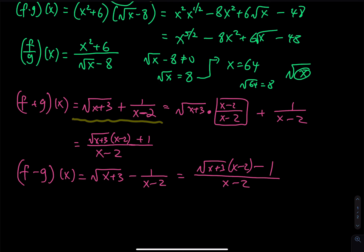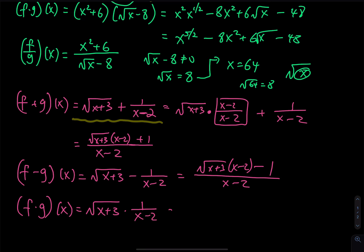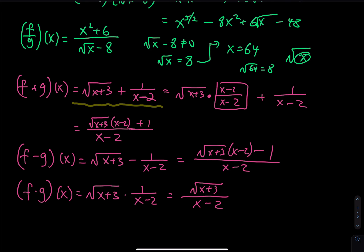For the product, f dot g of x is the square root of x plus three multiplied by one over x minus two, so you put the square root of x plus three on top divided by x minus two. This is a rational function — a function on top and a function on the bottom — so you must specify that x minus two cannot equal zero, therefore x cannot equal two.